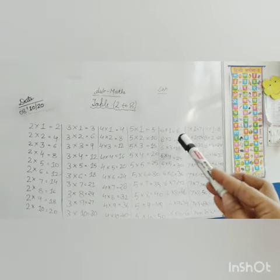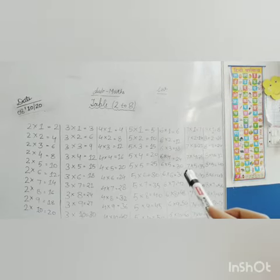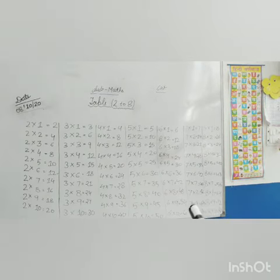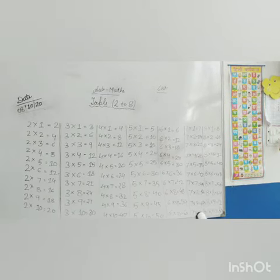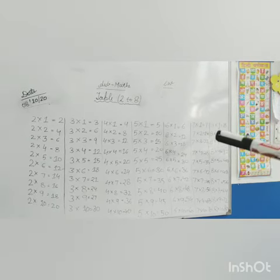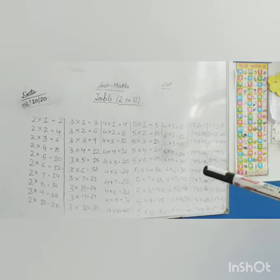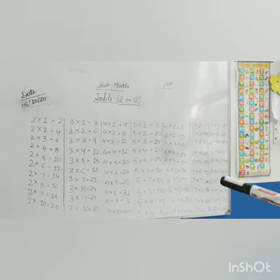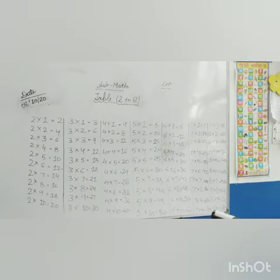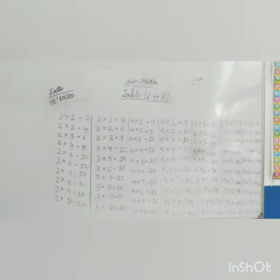7 ones are 7, 7 twos are 14, 7 threes are 21, 7 fours are 28, 7 fives are 35, 7 sixes are 42, 7 sevens are 49, 7 eights are 56, 7 nines are 63, 7 tens are 70. 8 ones are 8, 8 twos are 16, 8 threes are 24, 8 fours are 32, 8 fives are 40, 8 sixes are 48, 8 sevens are 56, 8 eights are 64, 8 nines are 72, and 8 tens are 80.